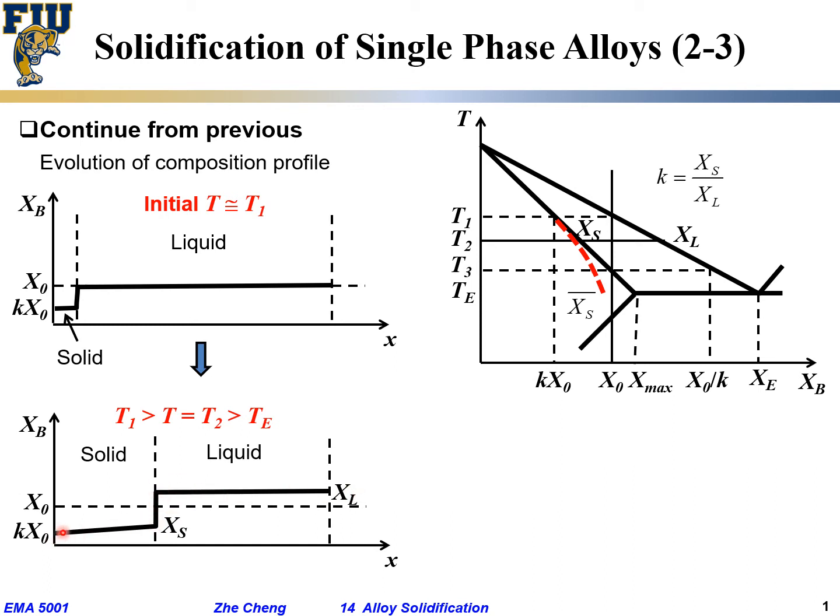And then, on the solid side, the first bit of solid composition, does it change? No. So it remains kx0. But right at the interface, what's the solid composition? We said right at the interface, at this temperature, we assumed so-called local equilibrium. Local equilibrium means right at the interface between solid and liquid, the composition will be determined by the intercept with the phase boundary. So if I'm here, T2, the solid composition is just the intercept here, which is xs. Of course xs and xl satisfy this relationship. Make sense? So that's here.